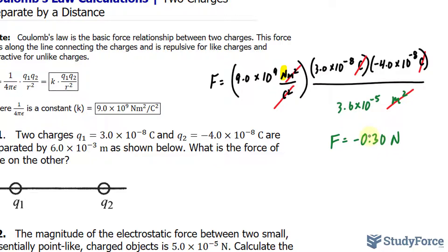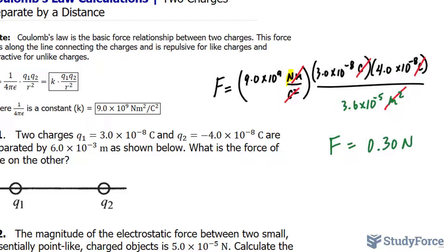I included that zero there because we started off with two significant figures in each of these values and we should end with two significant figures. Also don't forget to take the absolute of this value, which makes it positive 0.30 newtons, as you can see on your screen. To interpret this result, this is the force each of these charges experiences due to each other.